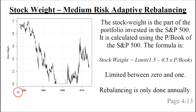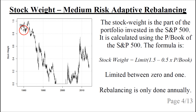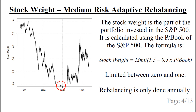The stock weight is plotted for each day during this long period, but the rebalancing is done annually. For example, around year 1980, the price-to-book ratio was very low, so the stock weight was high — almost one — meaning almost the entire portfolio should be invested in the S&P 500. Around year 2000, the price-to-book ratio was very high, so the stock weight was zero, meaning the entire portfolio should be invested in government bonds.